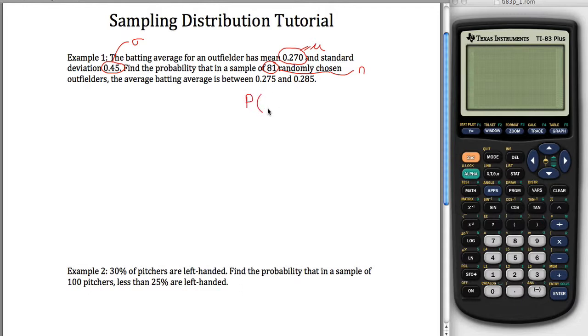We're now asking what's the probability that the average of 81 outfielders is between 0.275 and 0.285. In other words, we're trying to figure out the probability that x̄, not x, but x̄, the sample average, is between 0.275 and 0.285. That'll be key. That's what separates the problems we've done up to this point in our class with all the problems we'll do going forward in this class. Our random variable is now x̄, it's the sample mean, it's the average of these 81 people, it's not just one person.